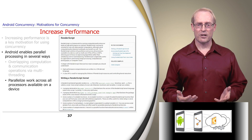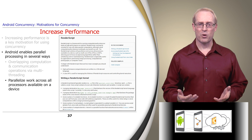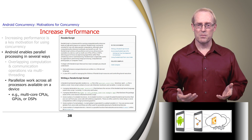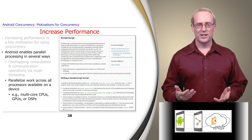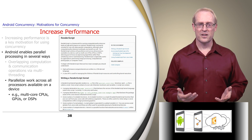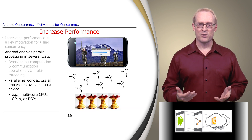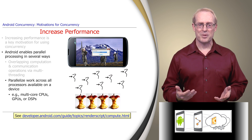Another way to accelerate performance on Android is to use the RenderScript framework, which parallelizes work across all processors available on a device, such as multi-core CPUs, GPUs, or DSPs. RenderScript is targeted at applications performing image processing, computational photography, or computer vision, as described in this link.